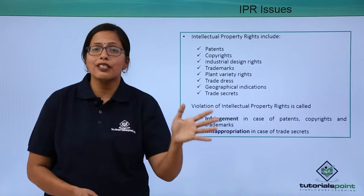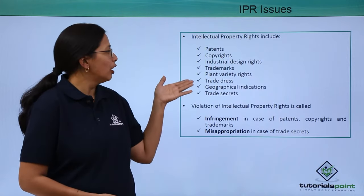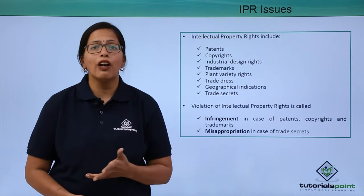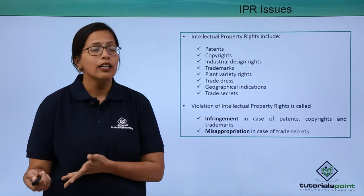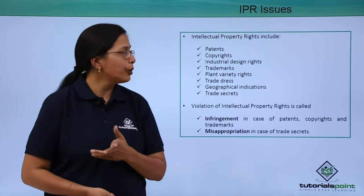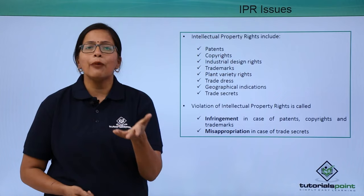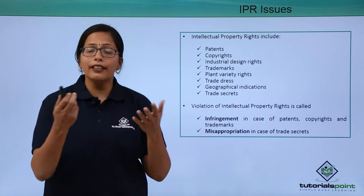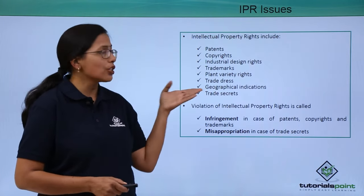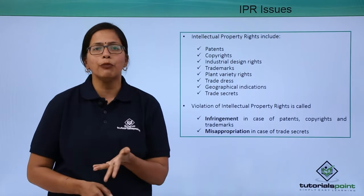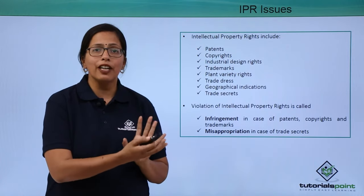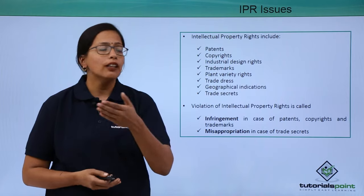Industrial design rights cover some design, some industrial design, some automobile design that you have created. Plant variety rights: if some new plant varieties of say maize, rice, or mango have been created by scientists, then they hold a right to it — no one can grow these crops without their permission. Trade dress: if any company or organization has designed a dress specifically for their employees, then they hold a copyright to it. Geographical indications, trade secrets — in the scientific or industrial community, they have specific designs and trade secrets, and they hold a right to those.